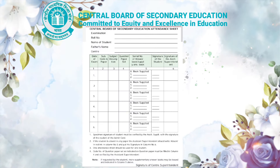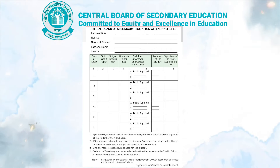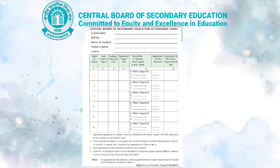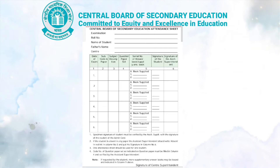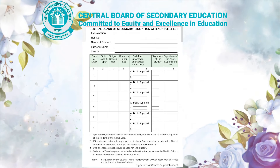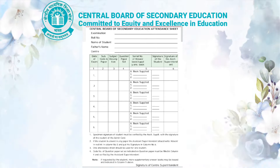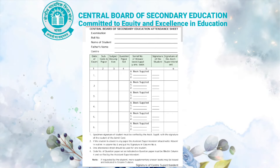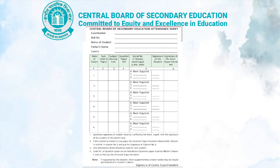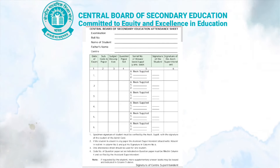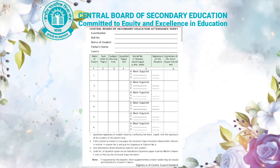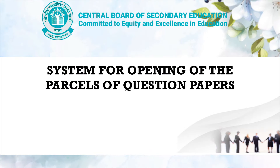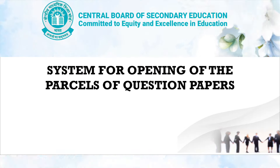This is a sample copy of the attendance sheet, where all students will write the subject code and paper, then the subject question paper set, the serial number of the answer booklet and supplementary, then the student will sign at the end. The assistant superintendent will sign after checking all the details.